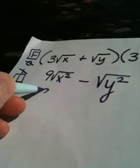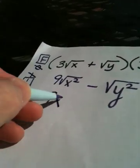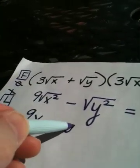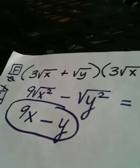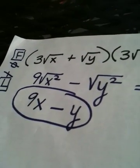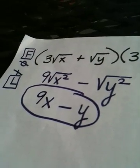In the front I have 9, square root of x squared is x, minus, and in the back the square root of y squared is y. We have 9x minus y, and we're done. This concludes section 7.3.